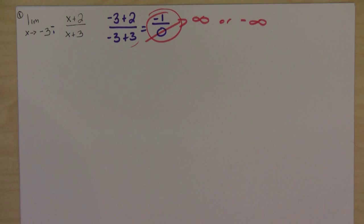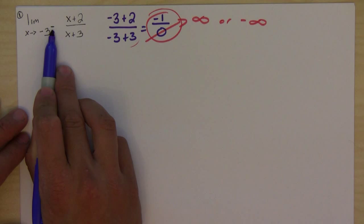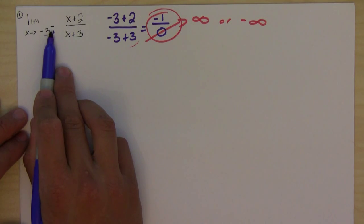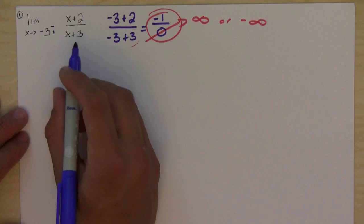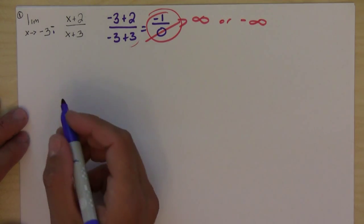The easiest way to do this is to look at what direction you're coming from. Since it's telling me from the left, I'm going to pick a number close to negative 3 from the left hand side and plug that number in to give me an idea.